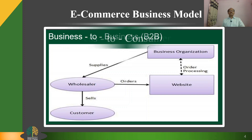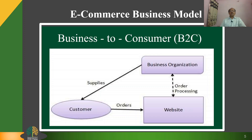B to C — Business to Consumer: a website following the B to C business model sells its product directly to a customer. A customer can view products shown on the website of the business organization, choose a product, and order it. The website will send a notification to the business organization via email, and the organization will dispatch the goods to the customer.